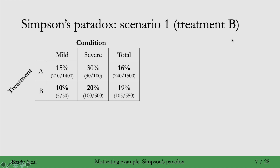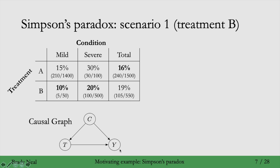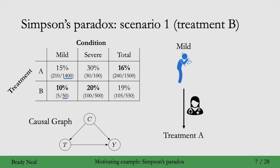In scenario one, the causal graph is that condition is a cause of treatment, and treatment and condition are both causes of the outcome. In this scenario, treatment B is generally the better choice. The example is that a doctor sees someone come in with a mild condition and might decide to assign them treatment A, because they want to save the more scarce treatment B for people with more severe condition — people who are more likely to die.